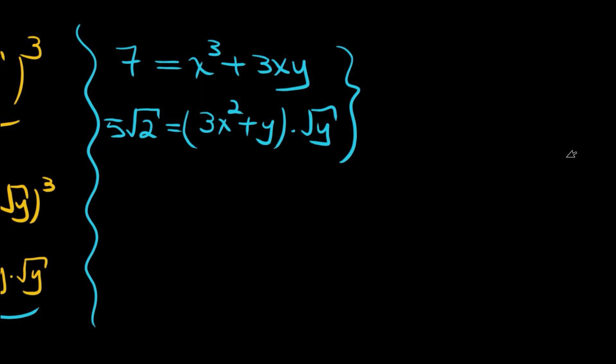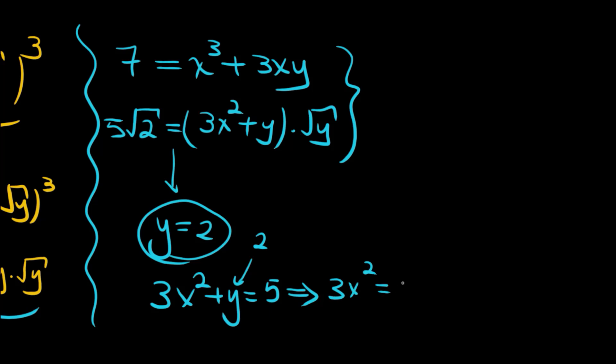From the second equation, it's not hard to say y can be 2. Let's check: if y is 2, then 3x square plus y equals 5. Since y is 2, we have 3x square equals 3, so x equals 1 or minus 1.